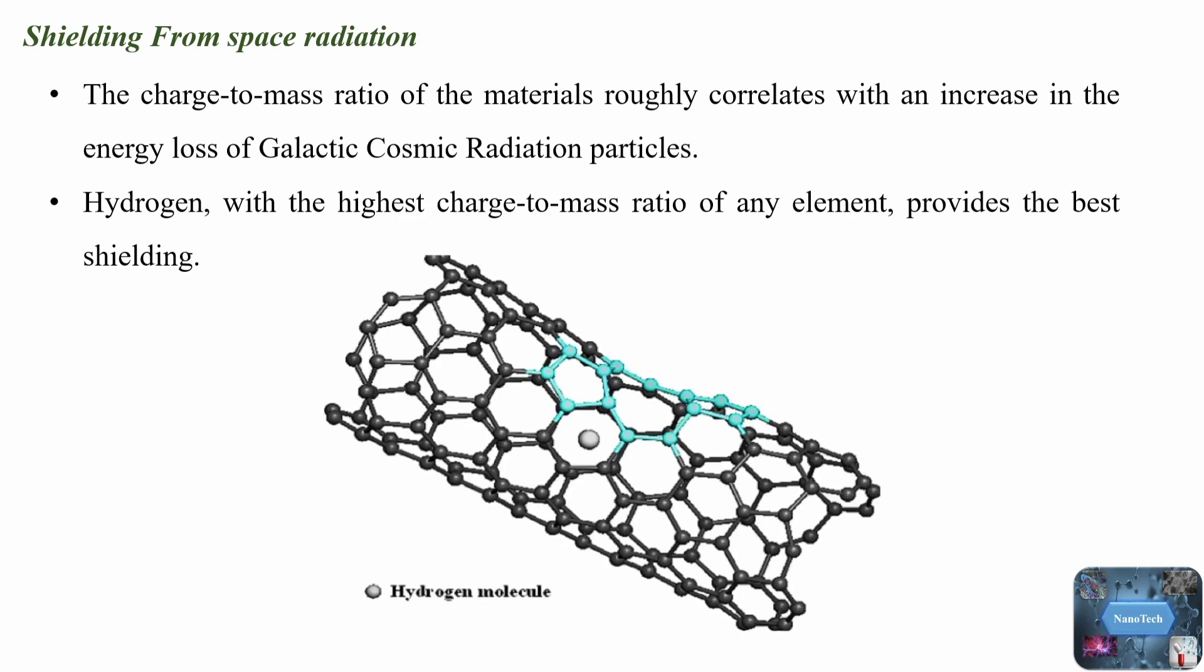Because a shield of pure hydrogen is not practicable, hydrogen-containing materials make the most suitable candidates for shielding against galactic cosmic radiation. Nanotubes have been favored to store hydrogen over particles and sheets because they have greater surface areas and higher hydrogen-binding energies.